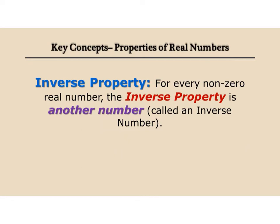The inverse property says for every non-zero real number, the inverse property gives another number called the inverse number. We think of that as: if it's a positive number, the inverse is a negative number. But it is another number and it's called the inverse number.